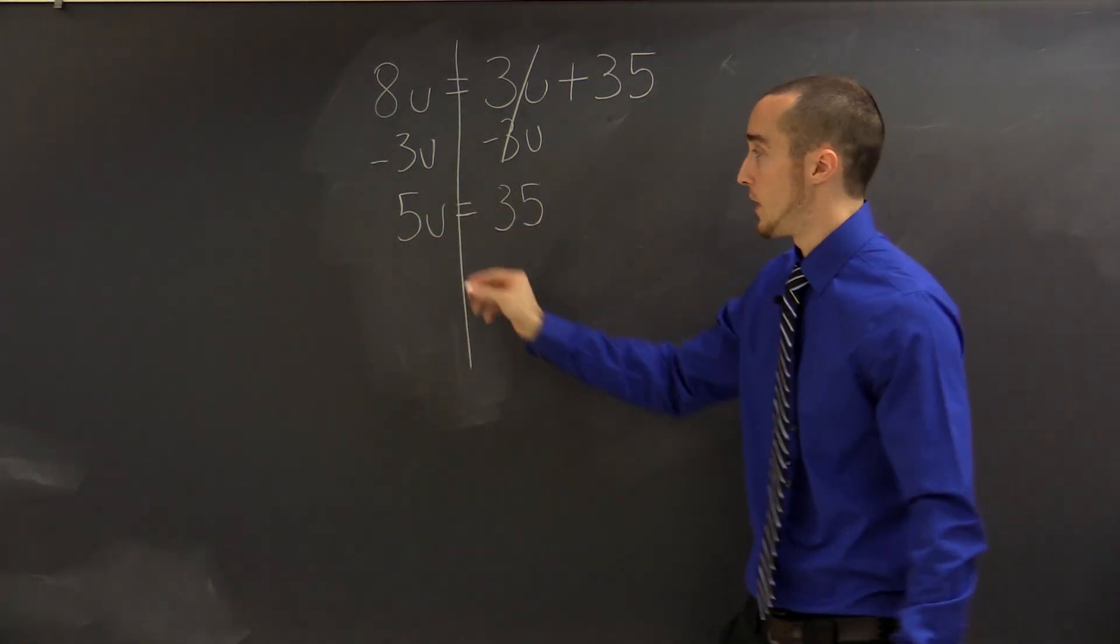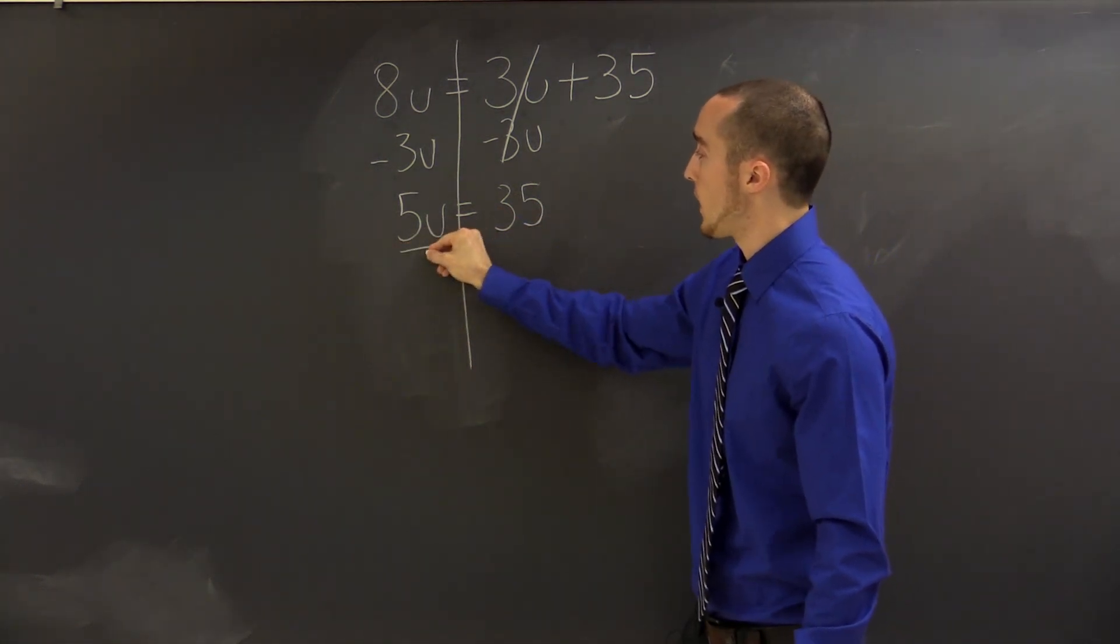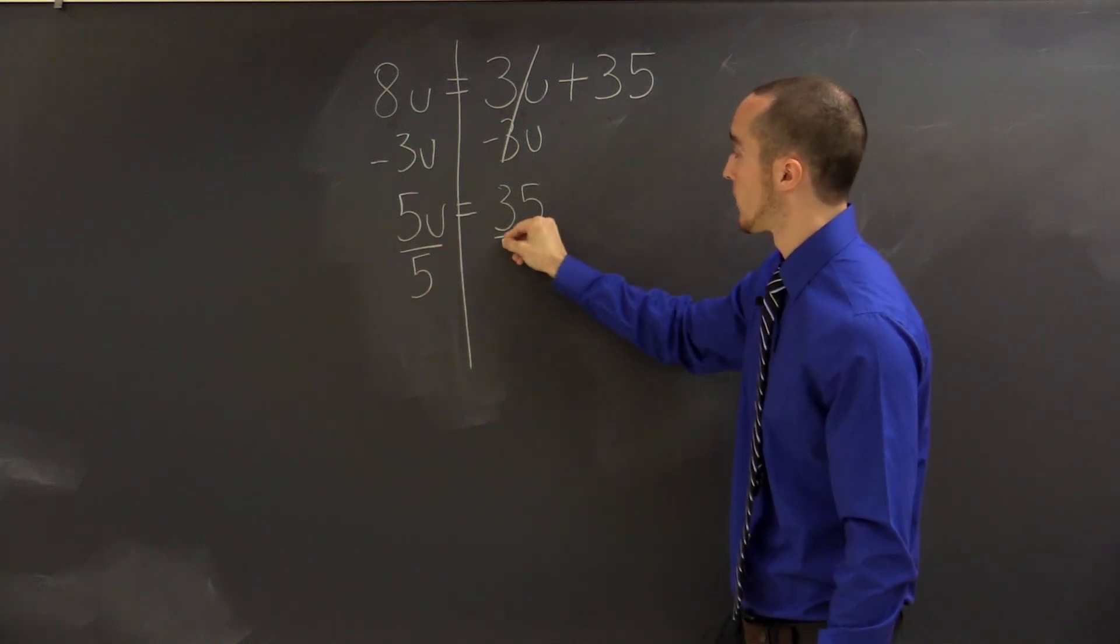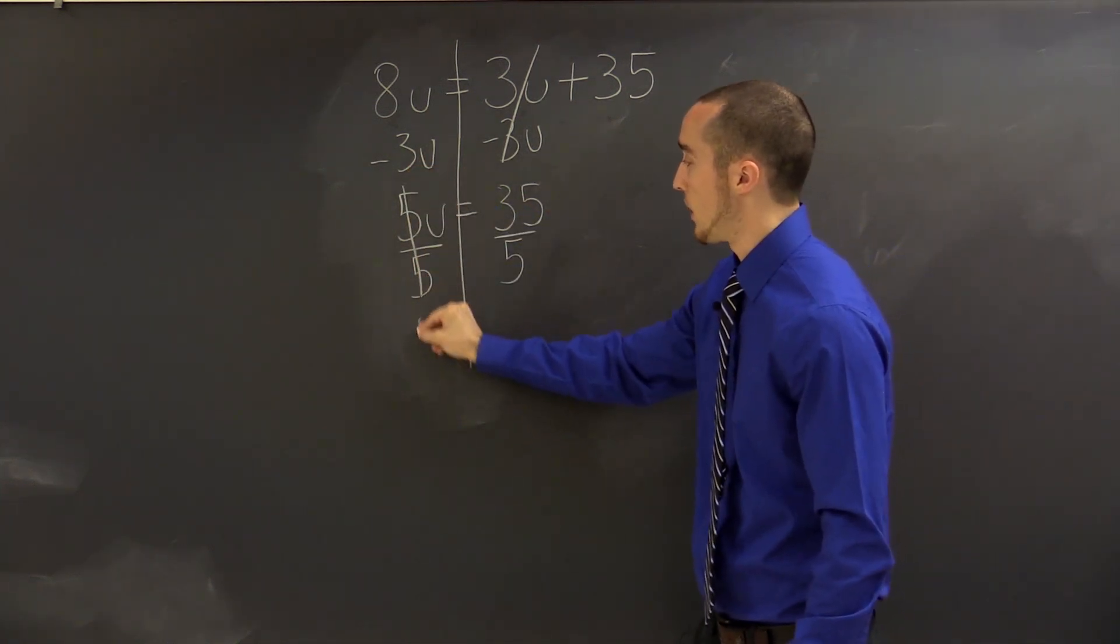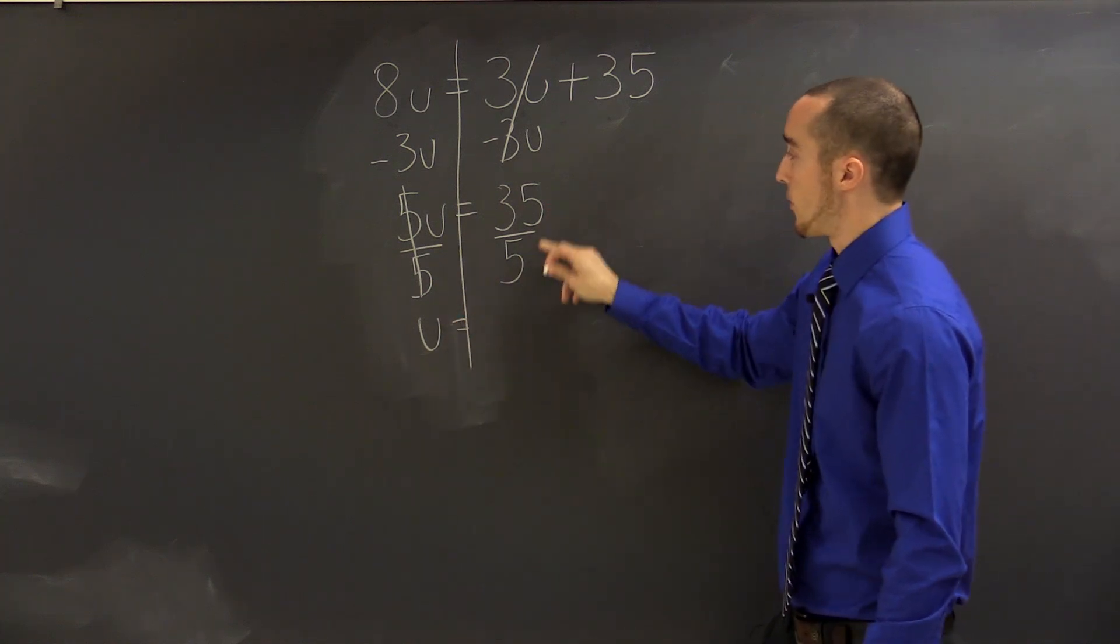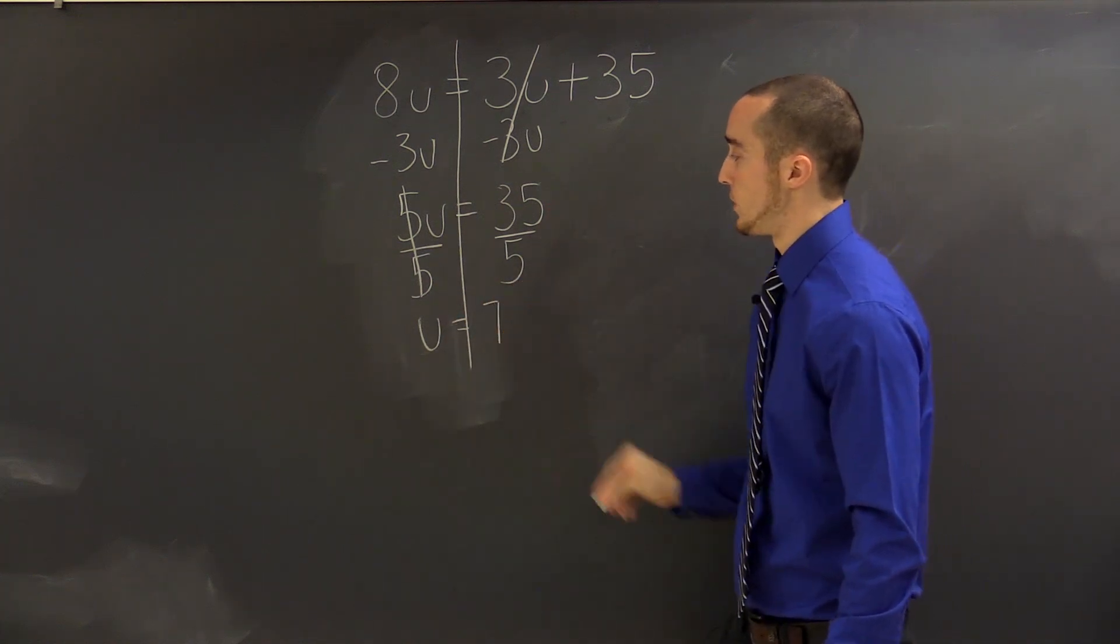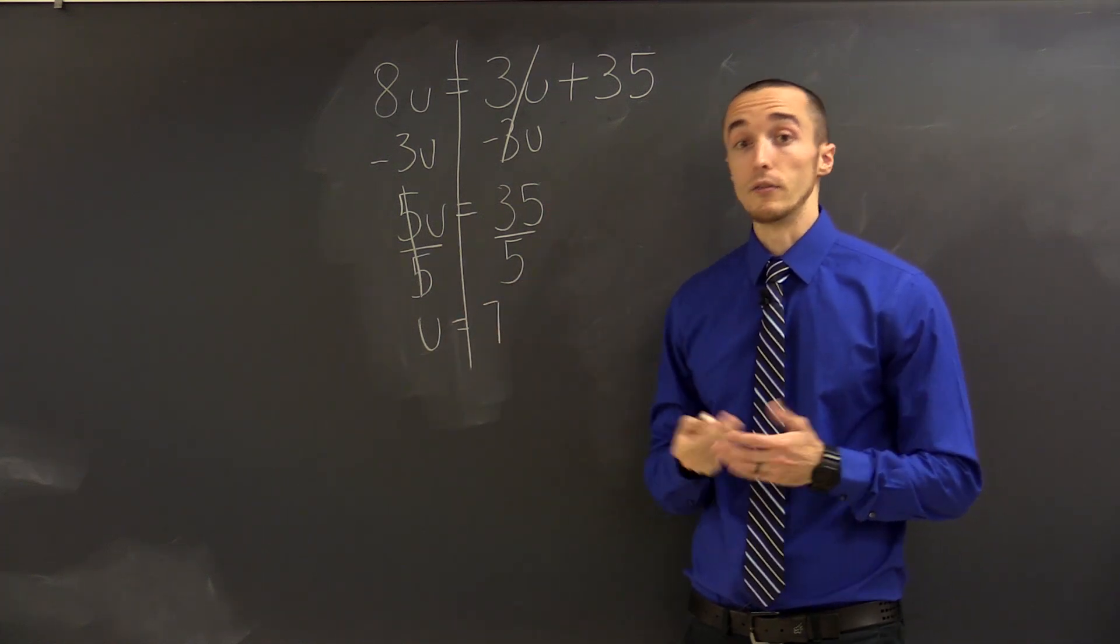And let's see what that leaves us with. If we cross out our 5s, we have u by itself. We get 35 divided by 5, which is 7. So we have a final answer of u equals 7.